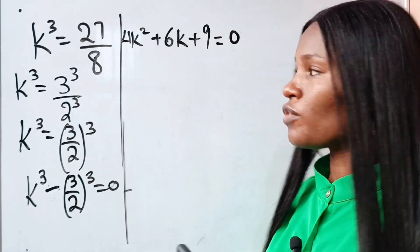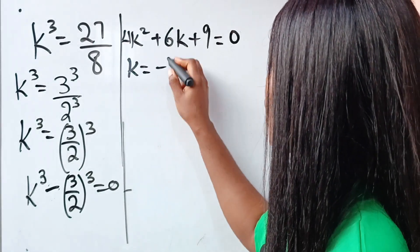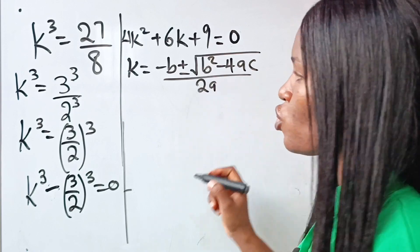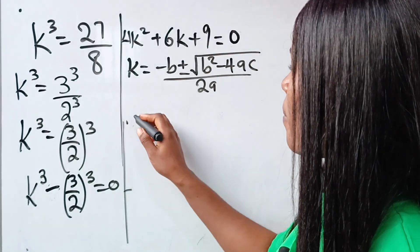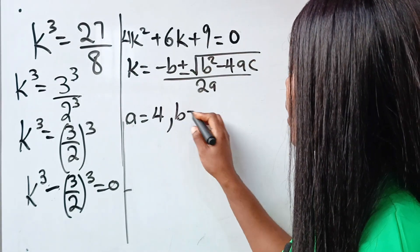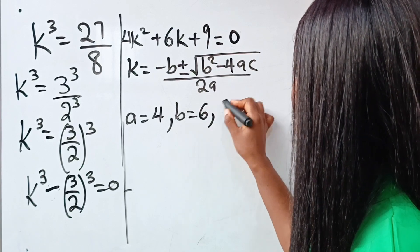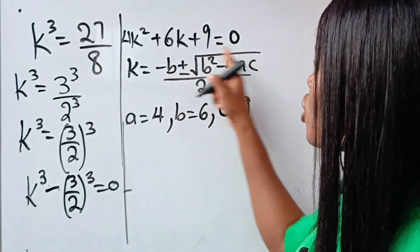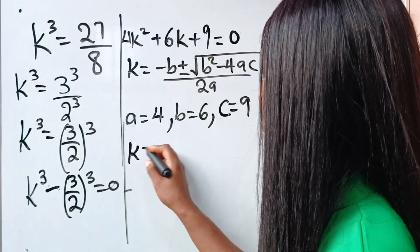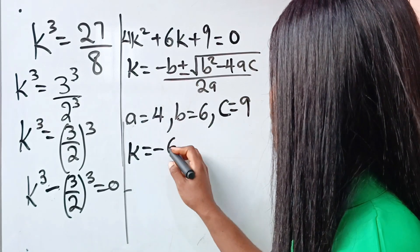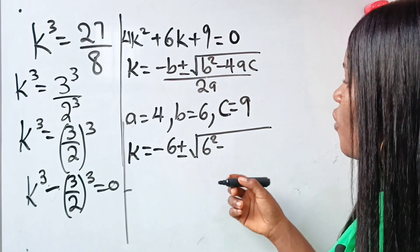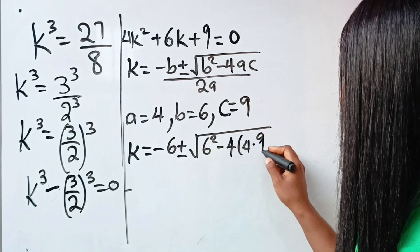We are now going to use the quadratic formula: k equals minus b plus or minus the square root of b squared minus 4ac, everything divided by 2a. In our equation 4k² + 6k + 9 = 0, our a is 4 — the coefficient of k squared — b is 6, the coefficient of k, and c is 9, the constant.